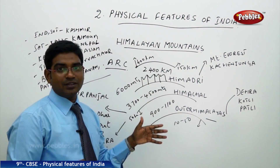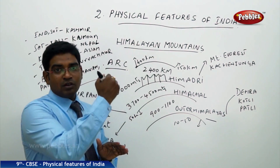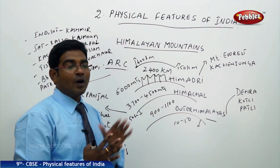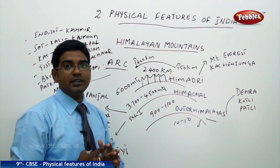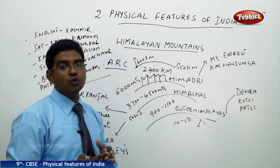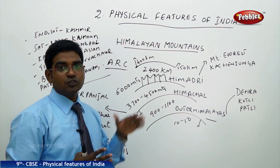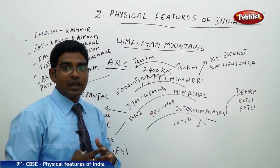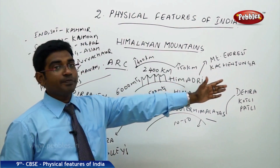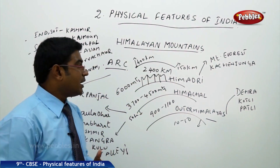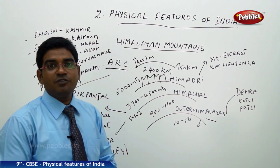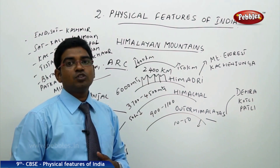We call it an arc because it makes a variation in width. The width is 400 kilometers in the Jammu and Kashmir region, while moving towards the east it reduces to 150 kilometers. So the shape narrows towards the east — from 400 kilometers to 150 kilometers.